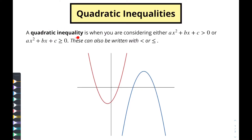A quadratic inequality is when you are considering either a quadratic being greater than zero, or greater than or equal to zero, or you could even write these with less than and less than or equal to zero. It doesn't really matter which way you're going with this — whether it's less than or greater than, it's all going to work essentially the same way.